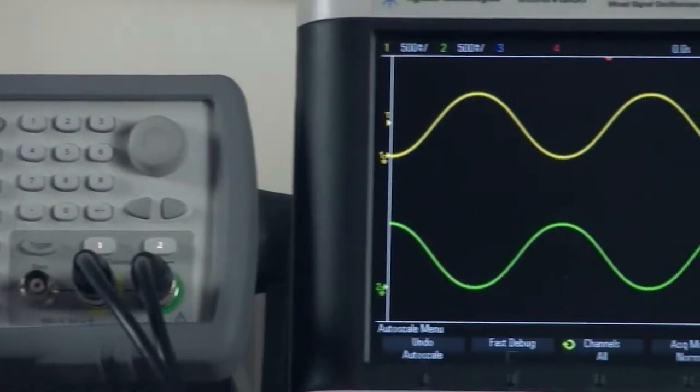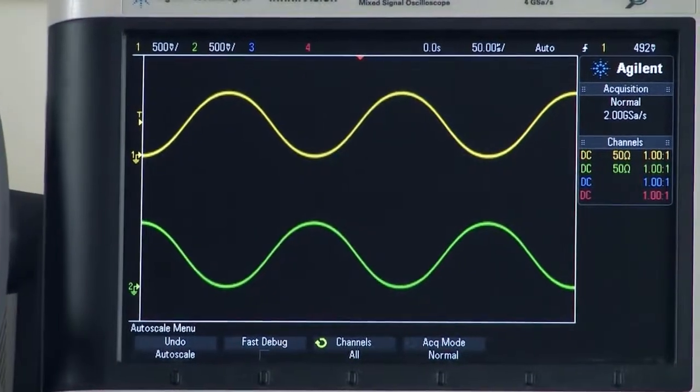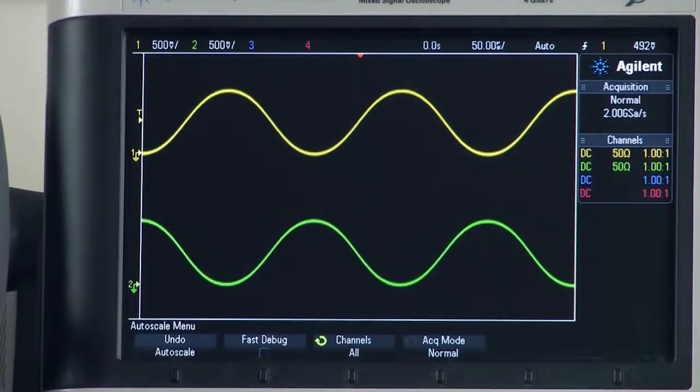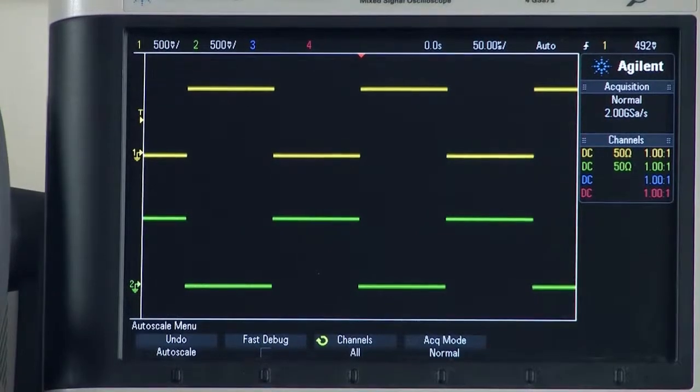As you can see we got an inverted sine wave right now. Now you expected a square wave but that's because the step filter is on. If I turn it off you get the square wave that you'd expect.